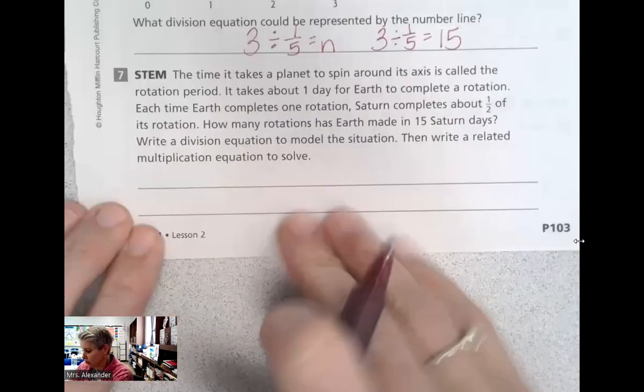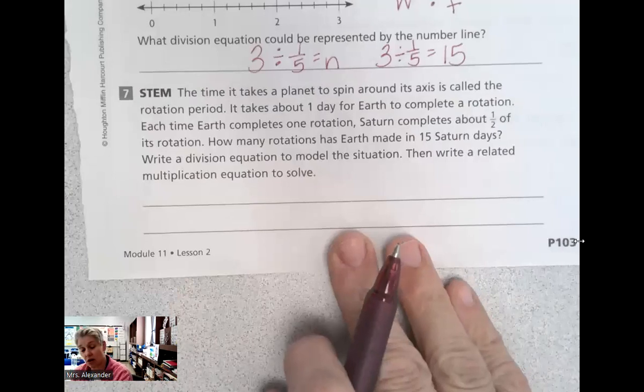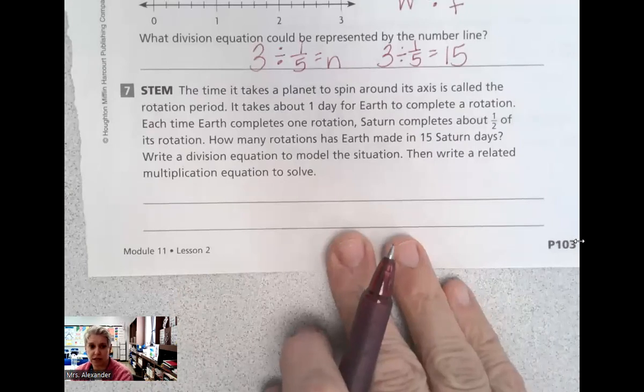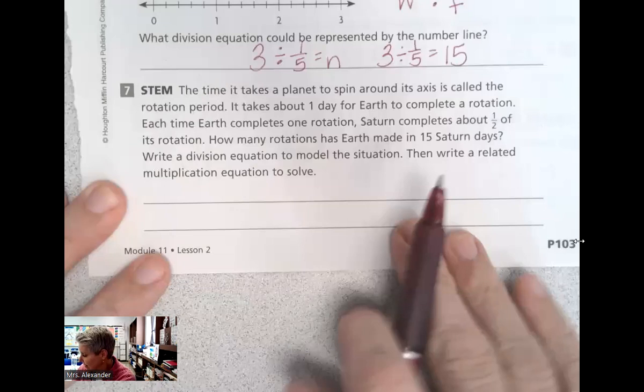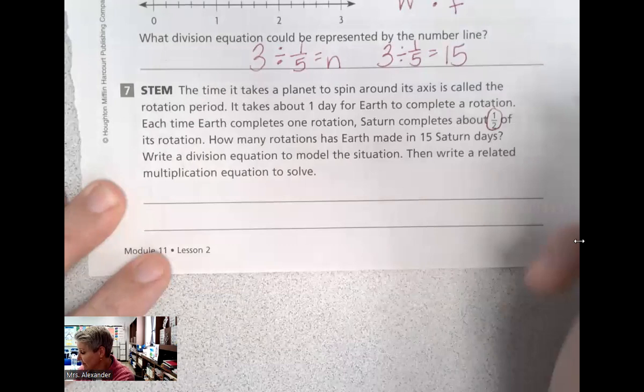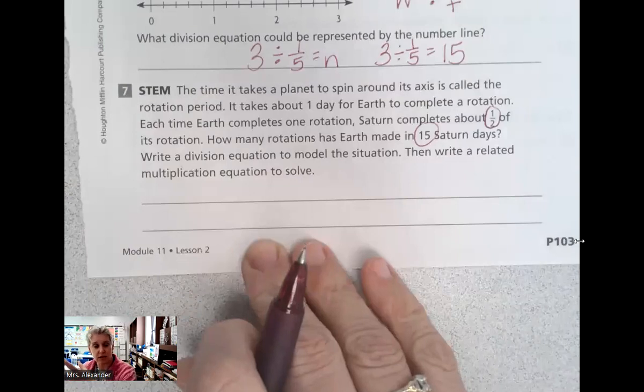Number seven might be a little more challenging. It's a stem. The time it takes a planet to spin around its axis is called the rotation period. It takes about one day for Earth to complete a rotation. Each time Earth completes one rotation, Saturn completes about half of its rotation. How many rotations has Earth made in 15 Saturn days? What would be our division expression here? If we have Saturn takes about half, makes half of its rotation. So Earth has made 15 rotations, Saturn has only gone half.